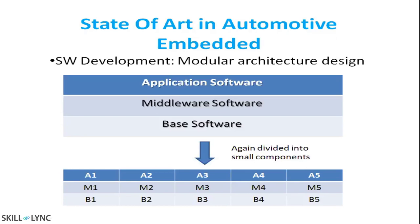Then we have the application software, which is nothing but the customer requirements. In automotive, customer requirements include things like wiper function implementation, brake control, start-stop function, cluster warning lamp indication, and many others. All applications are written on this layer of the modular architecture.